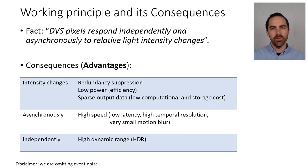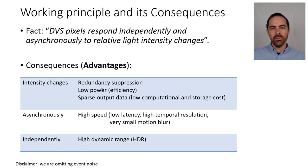One of the keywords is intensity changes. This means that event sensors do not produce absolute intensity — they detect intensity changes, which means that internally they are doing comparisons, and they only output informative pixels. So all temporal redundancy is removed. Because they only transmit these intensity changes, which are informative, they are very efficient and low power. These intensity changes also mean that the output is sparse, and therefore it has low computational and storage cost.